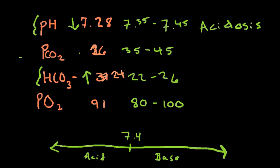Now, if we go through, we look at every value, and we notice that the pH is decreased, and the partial pressure of carbon dioxide is increased. We had 24 for the bicarb, so that's normal. And then 91 for the partial pressure of oxygen, so that's normal.